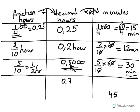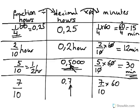What about 0.7 as a decimal? The last number in our decimal is in the tenths place, therefore 0.7 is the same as the fraction 7 tenths. If we would like to work out what 7 tenths is in terms of minutes, we take the fraction 7 tenths and multiply by 60. Six sevens are 42, so 7 tenths of an hour is the same as 42 minutes.